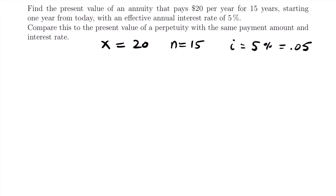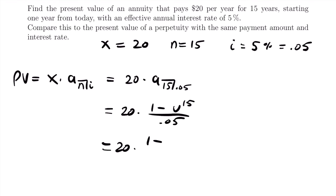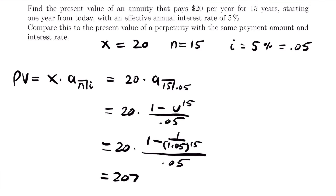Now let's calculate the present value of the annuity. The present value equals x times a_n|i, which gives us 20 times a_15|0.05. That equals 20 times (1 minus (1 divided by 1.05 to the 15th power) divided by 0.05). Plugging this into a calculator, the present value of the annuity equals $207.59.